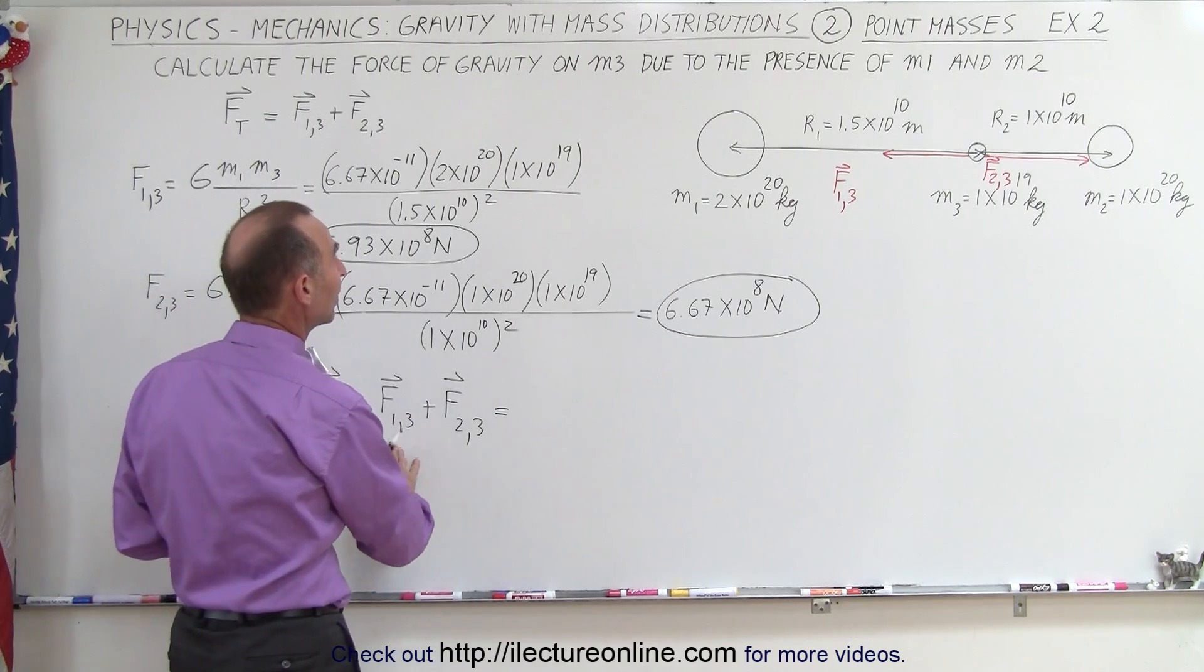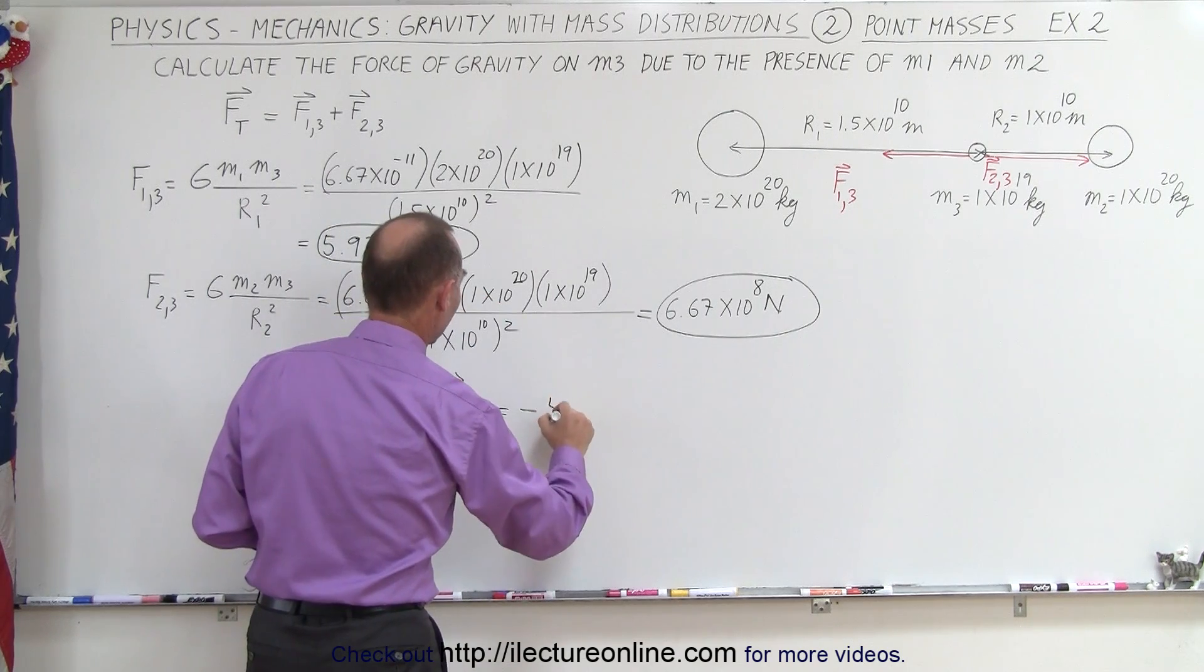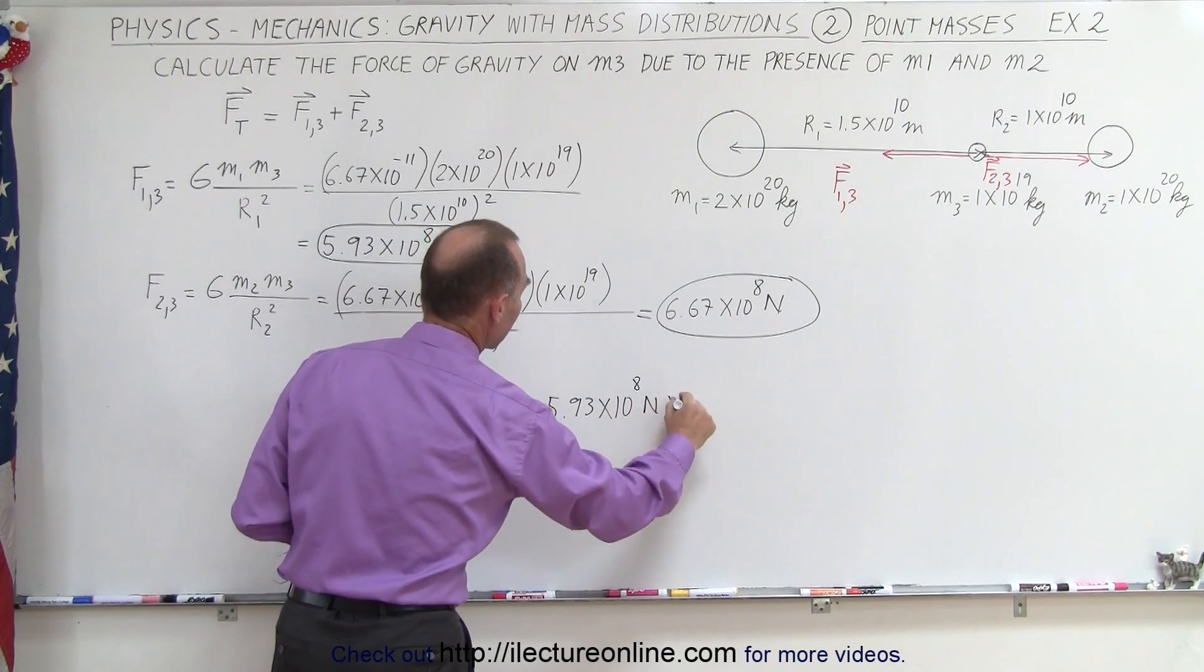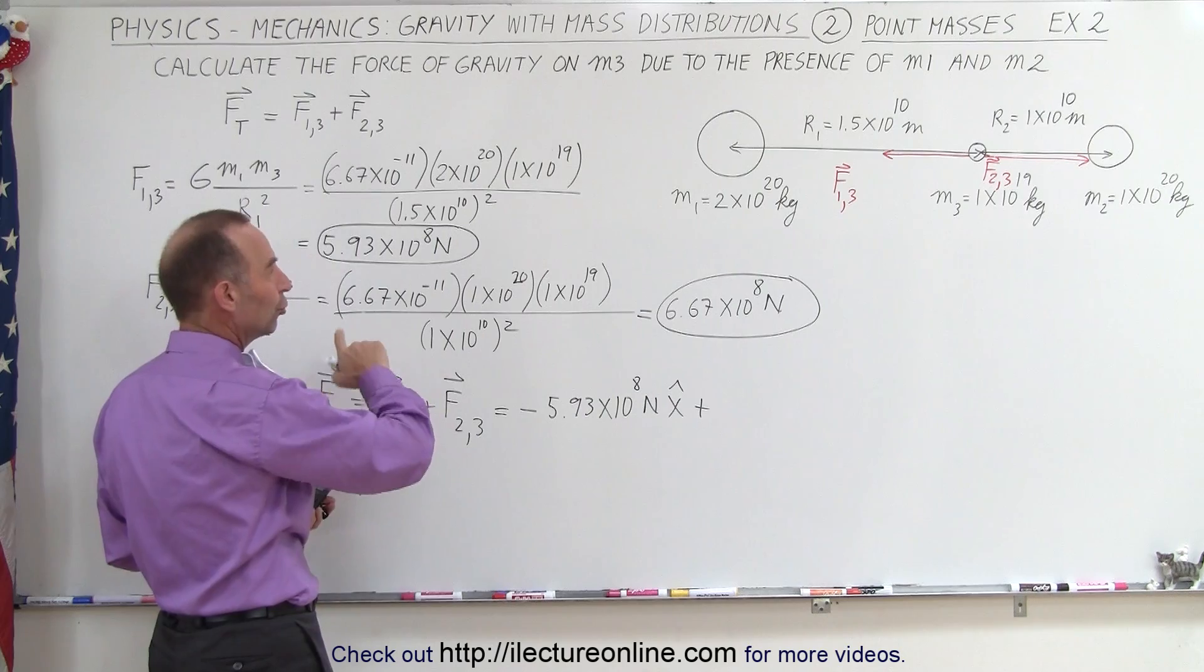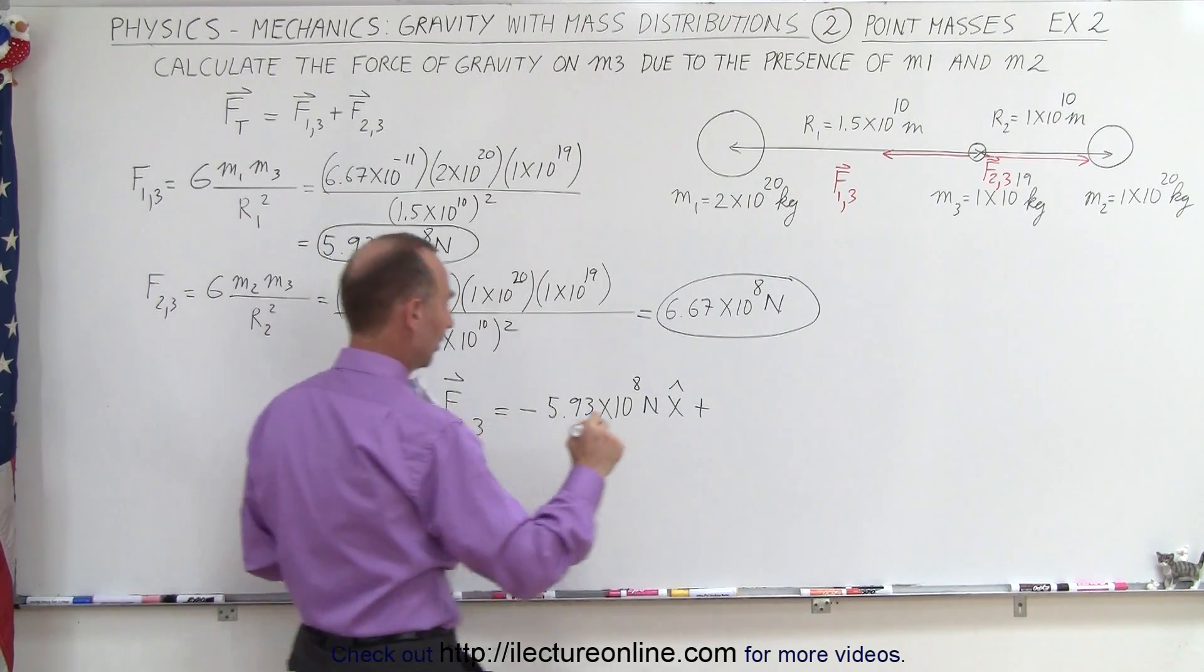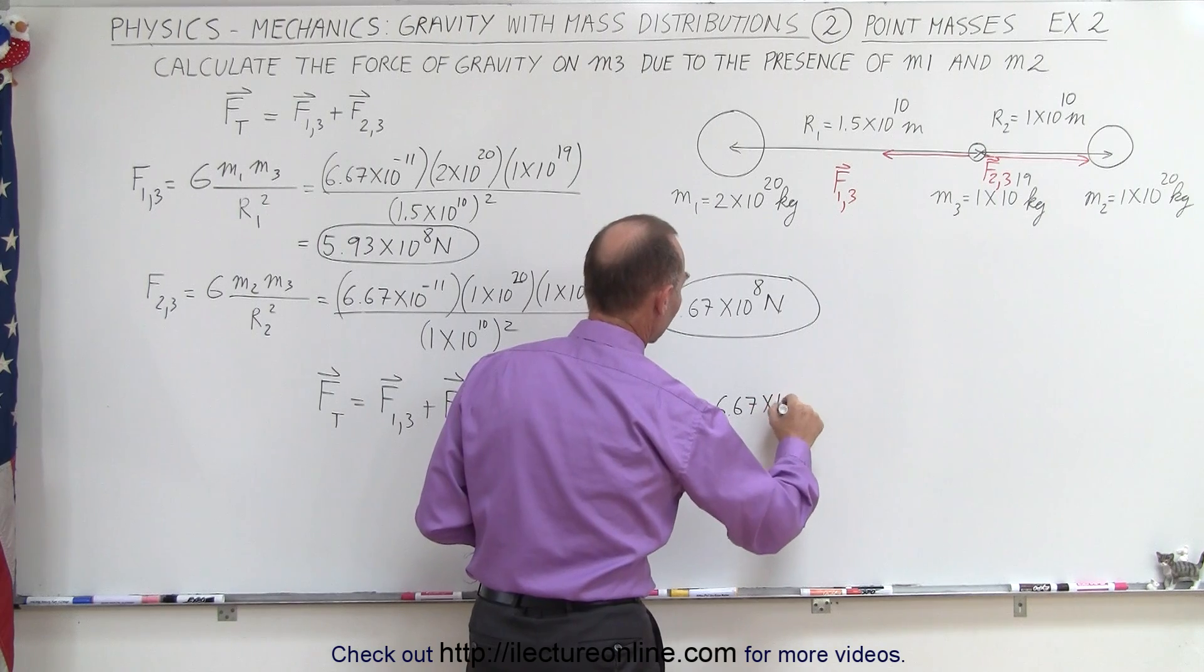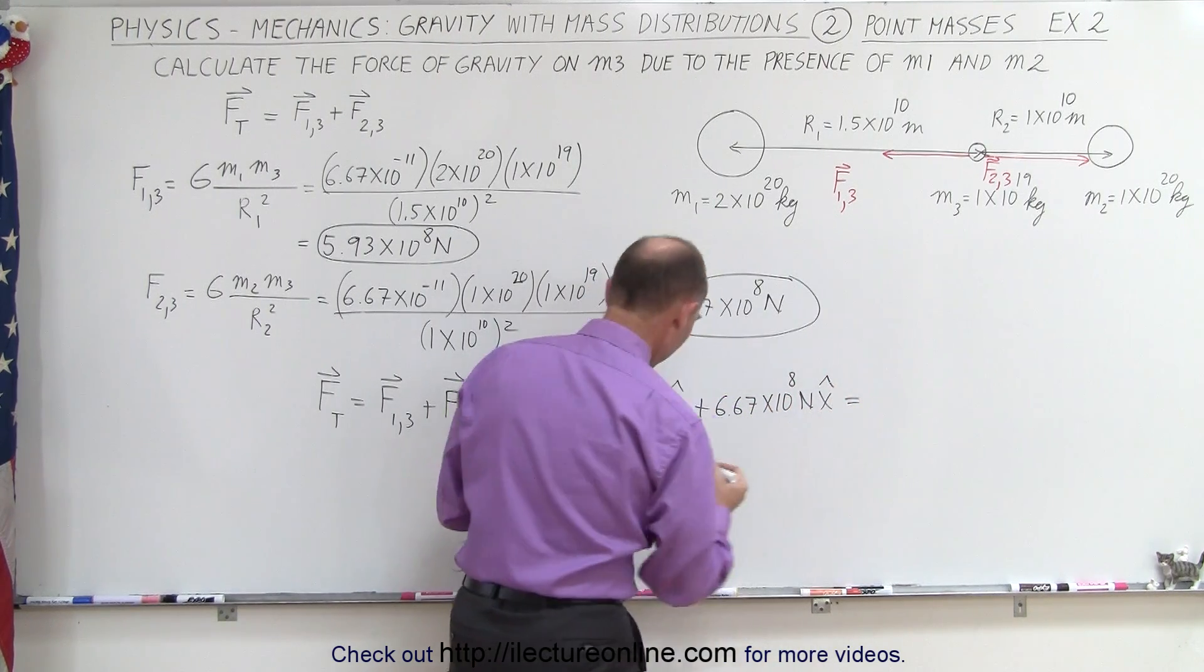So for F13, that's acting to the left, so it would be minus 5.93 times 10 to the 8 Newtons in the x direction. And then plus, because F23 is pointing to the right, so it would be plus 6.67 times 10 to the 8 Newtons.